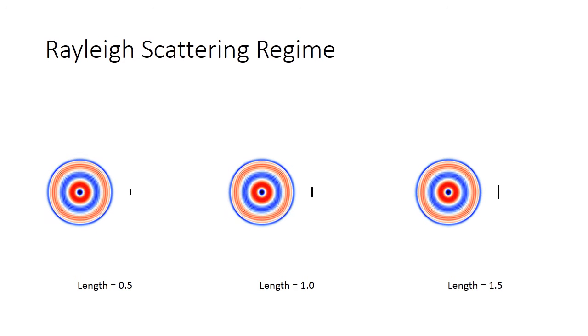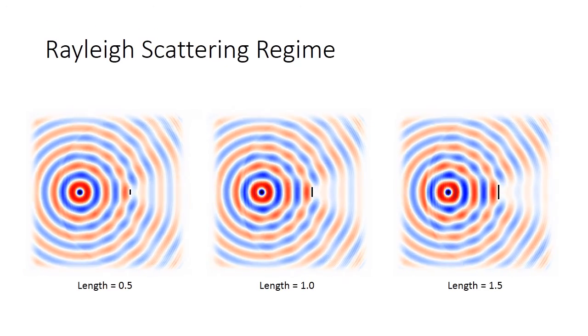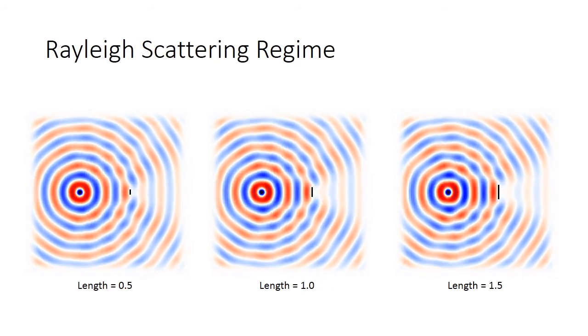When the wavelength of the incident wave is much greater than the obstacle's size, it is the regime of Rayleigh scattering. In this regime, we can clearly see that the scattered wave from the obstacle is equal in all directions due to very small size. Most of the wave is able to pass through the obstacle without being affected much. This phenomenon is responsible for the blue color in the sky we observe.